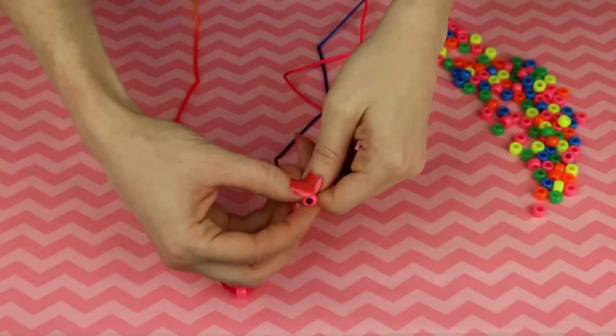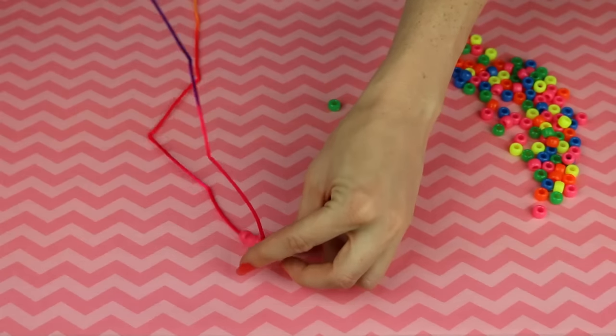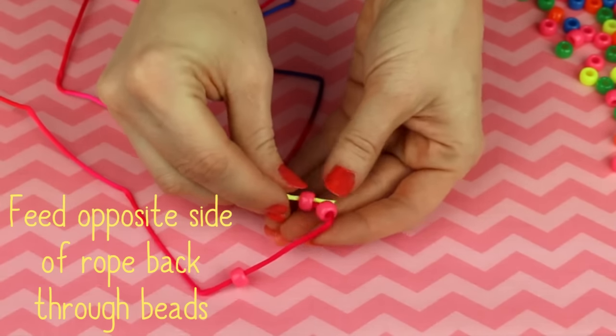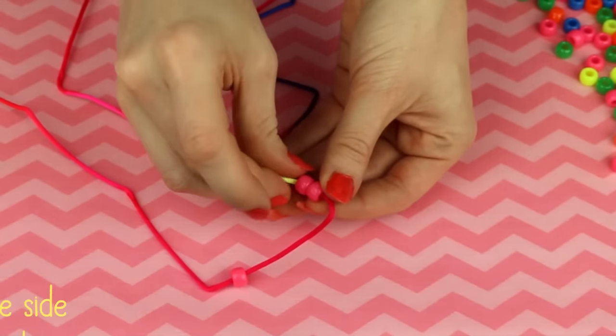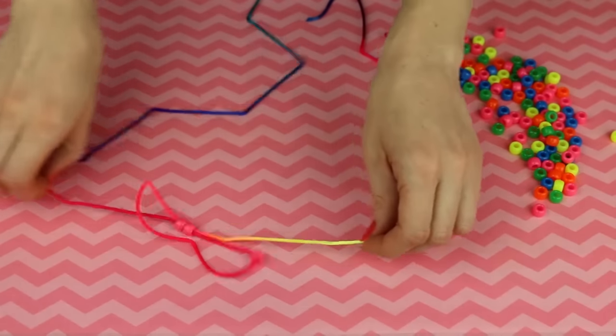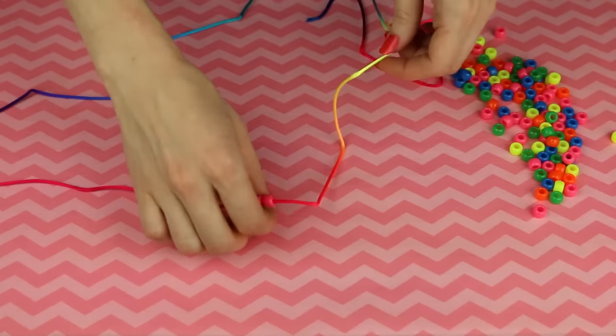All right, put on one bead and two more and those two are gonna be like the nose of your lizard. You're gonna want to feed the other side of the rope back through two of them. Easy peasy, like so and pull it. That is the basis of the whole lizard. You got to get that part down because that's like the whole thing.